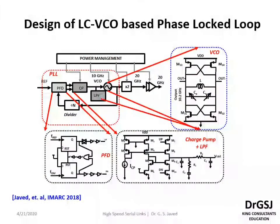Let us look at the design of the LC VCO based phase locked loop, highlighted in red. A reference frequency is given to the input, which receives the parallel comparison output from the divider of the VCO. That information is sent to a phase frequency detector, and the difference is fed into the charge pump, which then gives the control voltage to the VCO. The PFD is designed using two D flip-flops with delay elements to control the reset time and identify the up and down signals. One D flip-flop receives the reference frequency as its clock input, and the other receives the divided signal.